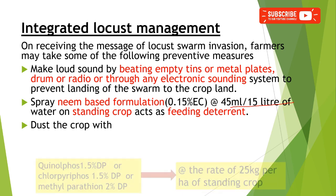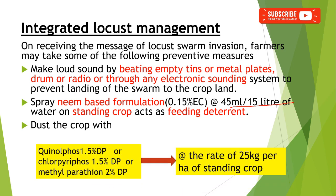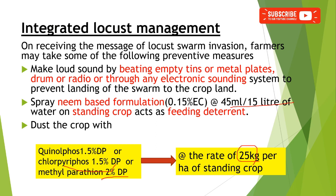Dusting the crop with dust formulations such as Phenthoate 1.5 percent, Chlorpyrifos 1.5 percent, or Methyl Parathion 2 percent dust formulation at the rate of 25 kg per hectare on standing crops is also recommended.